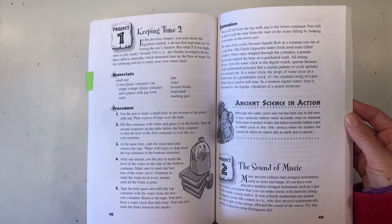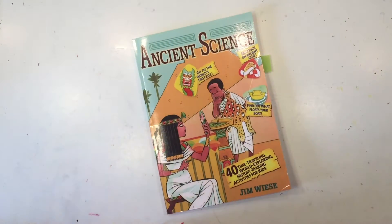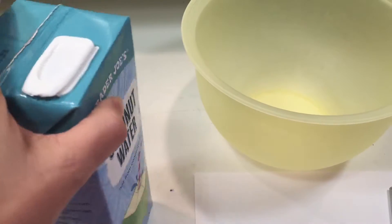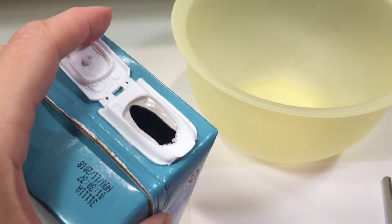Now we have made water clocks before for our ancient civilizations main lesson blocks and we're going to do this a little bit differently this time and again we're not going to get the best results.